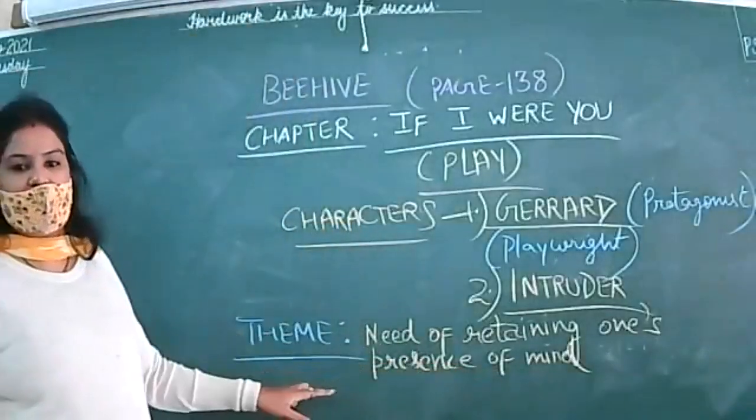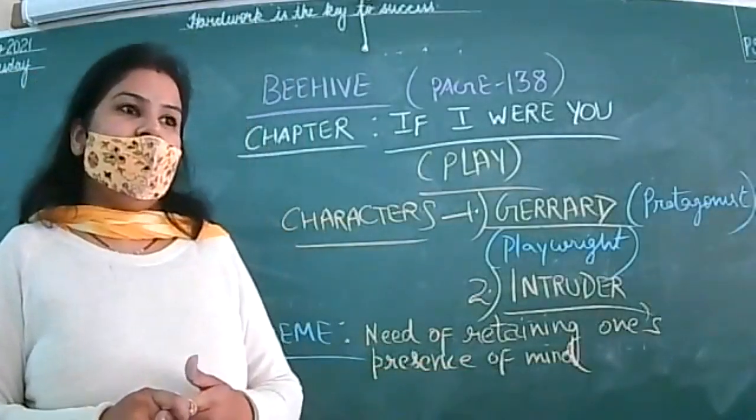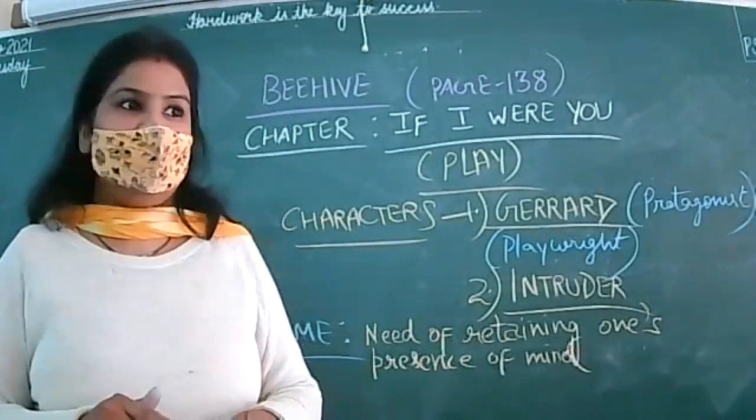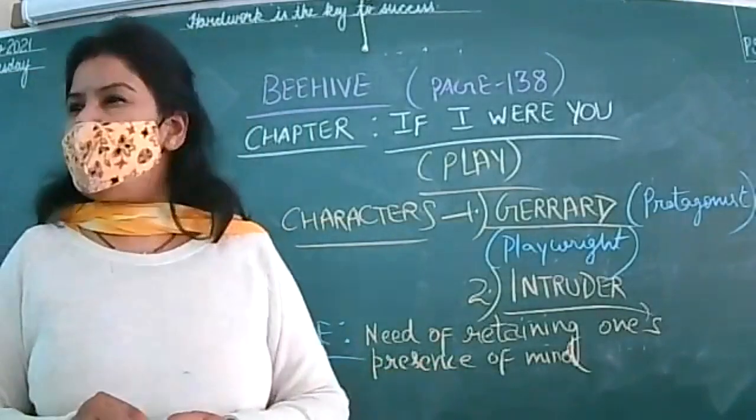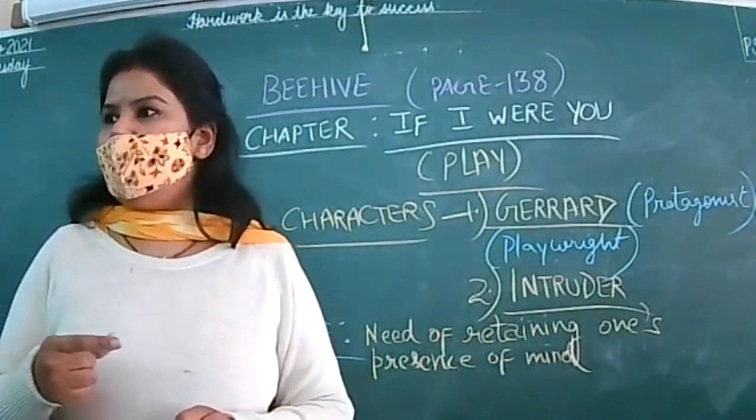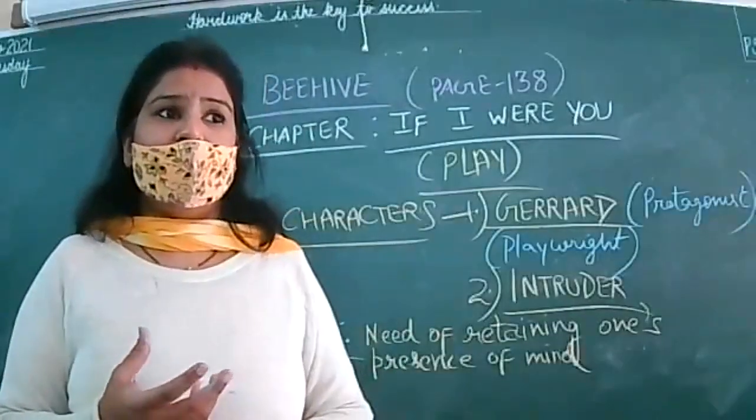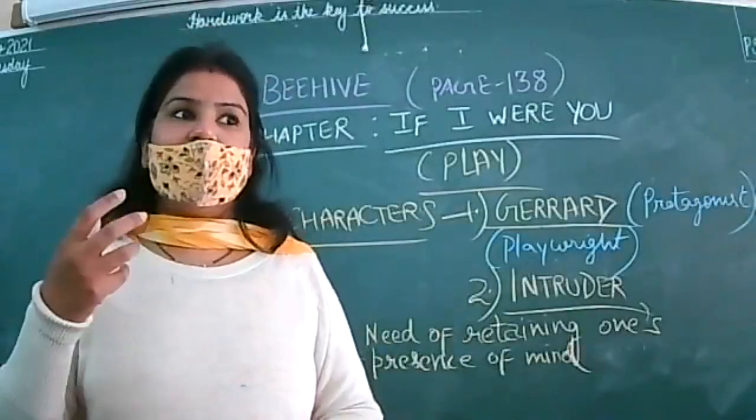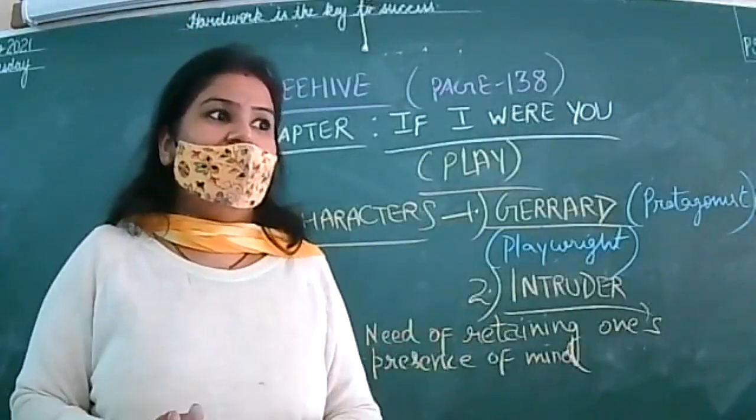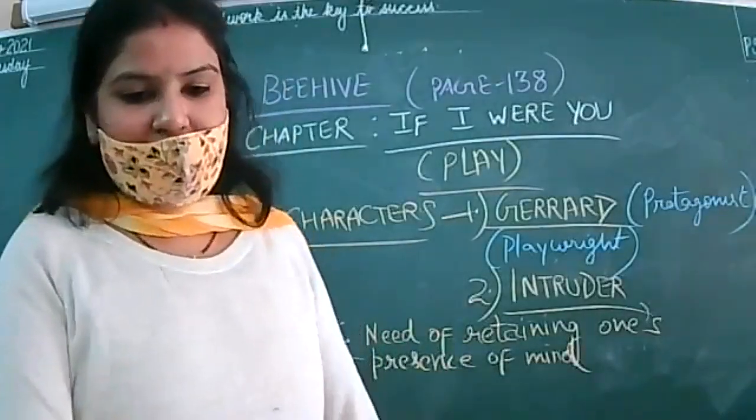And somebody will be smart enough to go and lock that person in the same room. So fraction of second, you need to take the decision. This chapter is going to teach us need of retaining one's presence of mind. How smart you should be. One should be very smart to survive in this world, and very pretentious also. This is very important to understand, whether you are a student or whether you are doing jobs somewhere.